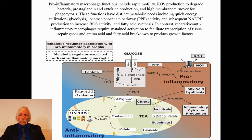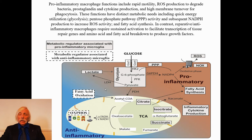Notice that citrate can be converted to itaconate. Normally you think about cis-aconitate, which is the intermediate between citrate and isocitrate, but here we have this new metabolite — itaconate — which seems to be involved in inflammatory cytokine production. The metabolic regulators associated with pro-inflammatory microglia are in the solid squares, while the dotted ones represent metabolic regulators associated with anti-inflammatory states. The anti-inflammatory pathway runs the normal TCA cycle with plenty of fatty acid oxidation rather than fatty acid synthesis.